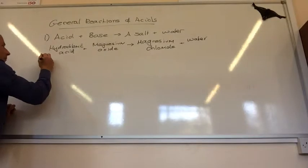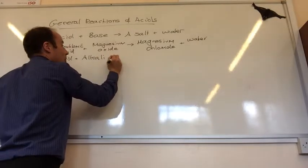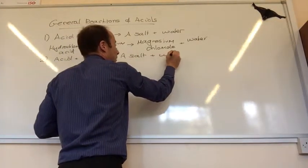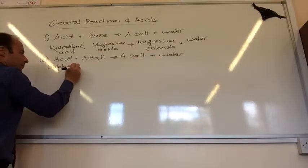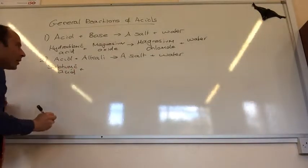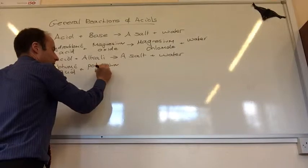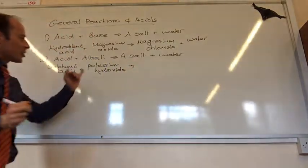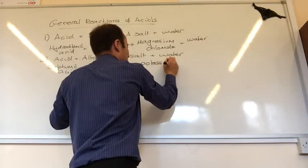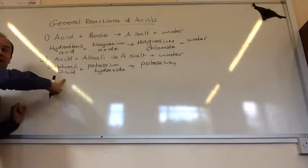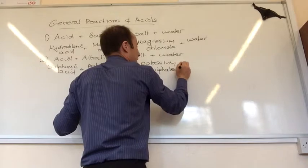Number two, very similar, is an acid plus alkali. Remember an alkali is a soluble base. It again gives me a salt plus water. So now I'm going to use my acid, sulfuric acid. My alkali, this time I'm going to use potassium hydroxide. So my salt, I'm going to get the first part from potassium. The second part of the name comes from the acid, sulfuric acid gives me sulfates. So potassium sulfate plus water.